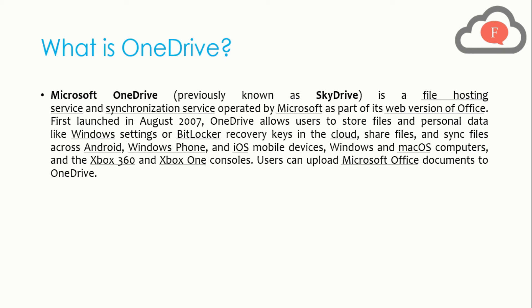In simple words, OneDrive is a space that is not physical. You upload data to the cloud and it is saved on certain servers, which you can access through the internet anytime from anywhere using just a username and password. When you save something on your computer, laptop, or mobile, it is stored in physical space within that device — a hard disk or SD card — and that data exists only within your device.